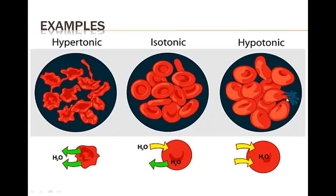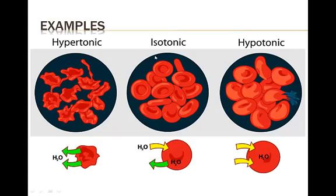In a hypotonic solution, the water on the outside is going to be pure water — there's nothing in it. Since our blood has things in it, such as hemoglobin and iron in the red blood cells, there's going to be a greater amount of pure water on the outside, and it's going to try to enter into the blood cells. This causes the blood cells to lyse — rip and tear. So hypertonic means more solutes on the outside than in the blood; isotonic means they're the same; and hypotonic means the solution on the outside has less solutes in it — is more pure — than the red blood cells themselves.